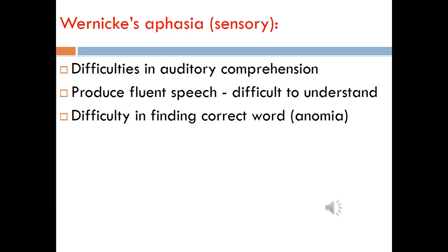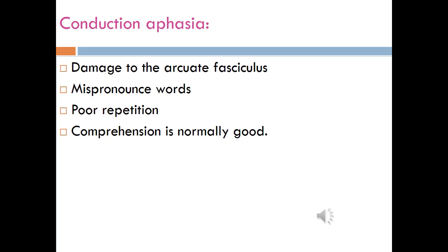Another kind of language impairment involves Wernicke's area — Wernicke's aphasia is characterized by difficulty in auditory comprehension, difficulty in producing fluent speech, and difficulty in finding the correct word. Another kind of aphasia is called conduction aphasia, which is characterized by damage to the Arcuate Fasciculus area. It is characterized by mispronouncing words and poor repetition, while comprehension is normally good.